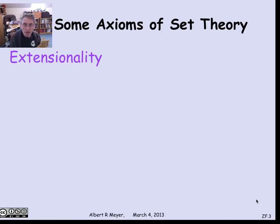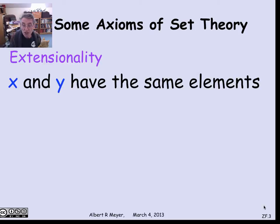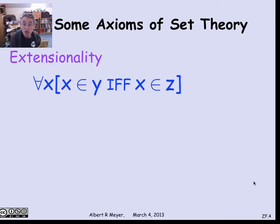One of the basic axioms of set theory is called extensionality, which captures the idea that a set is determined by its members. Let's consider the assertion that two sets y and z have the same elements, which we could write as a predicate formula: for all x, x is a member of y if and only if x is a member of z.